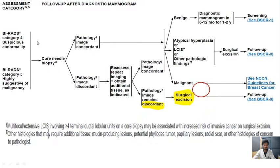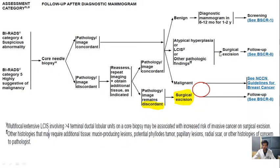Patients who undergo mammography in either BIRADS-4 (suspicious abnormality) or BIRADS-5 (highly suggestive of malignancy) are followed by core biopsy. If the pathological image is concordant, it can be divided into benign, malignant, or high-risk atypical lesions — atypical hyperplasia, lobular carcinoma, or other pathologic findings. In the latter case, it is followed by surgical excision.